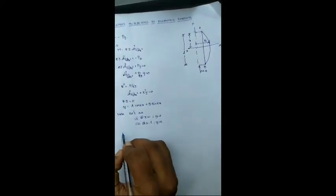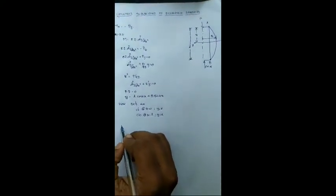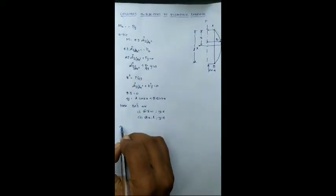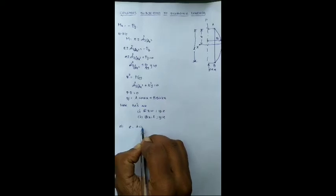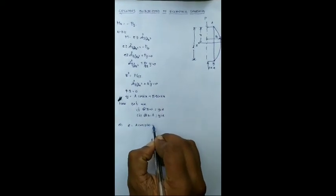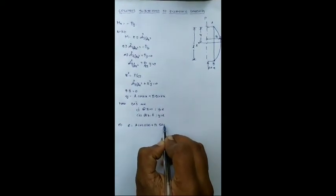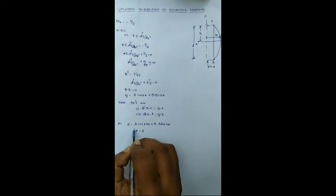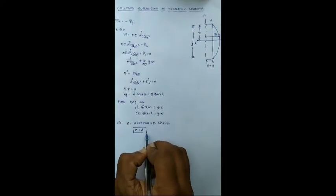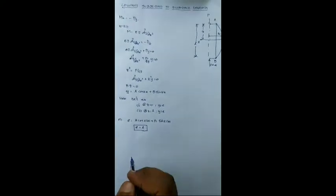Now substitute the boundary condition number 1. We get e is equal to a cos k0 plus b sin k0. Simplifying, we will get the value of constant A as the eccentric distance small e.